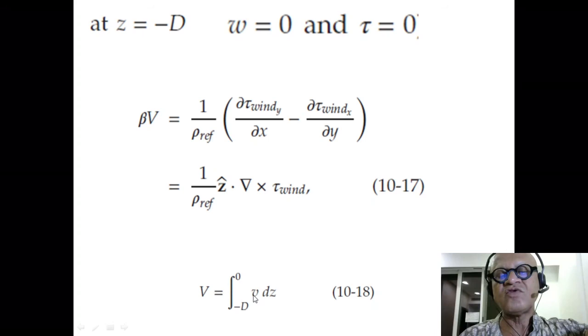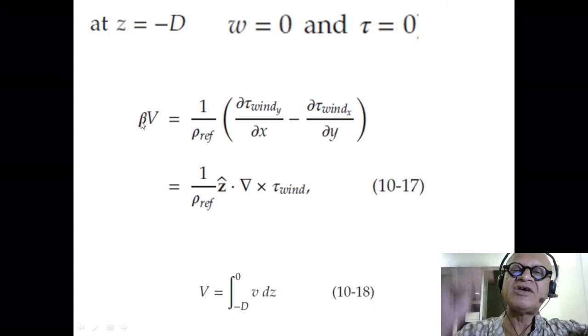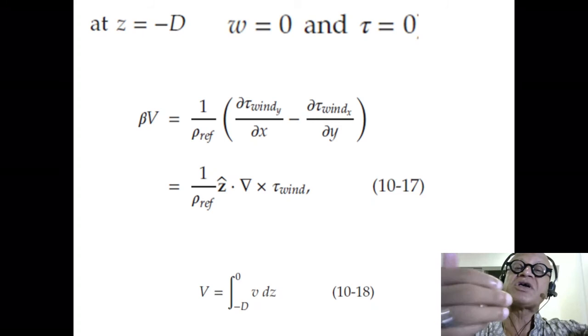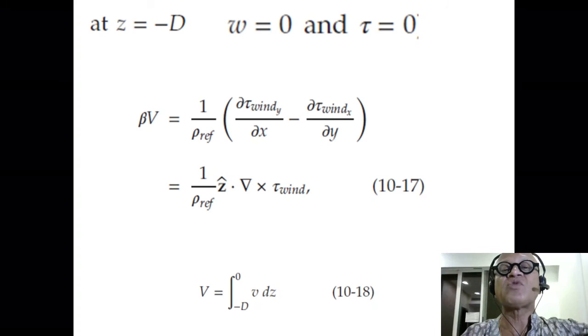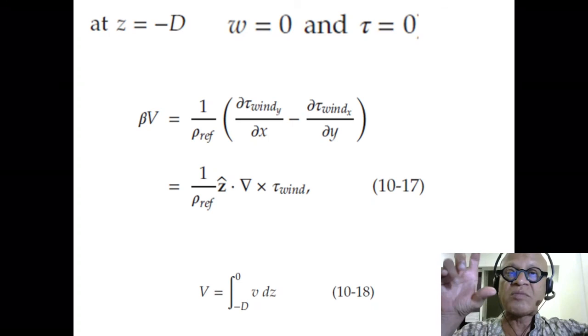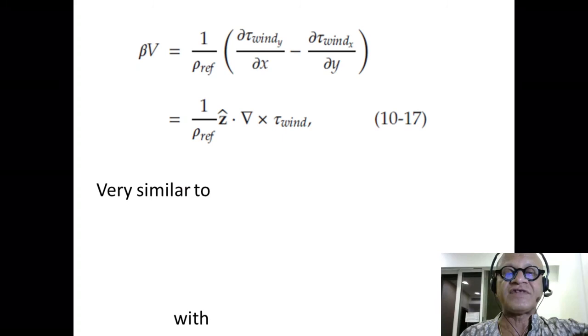So we are just integrating from the top to bottom and we are defining the integrated meridional transport as minus d to 0 v dz. V is, of course, the meridional velocity. This is telling us that the integrated meridional transport is directly a response to wind stress curl. We had already said that Ekman pumping introduces meridional circulation, whereas this is integrating down to some depth where the motions are negligible and saying that transport, meridional transport over that depth, is related to the wind stress curl at the surface.